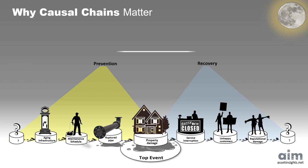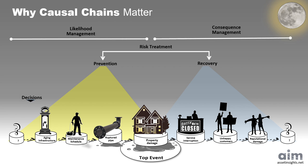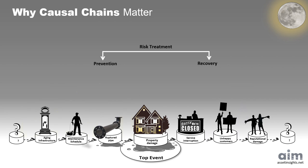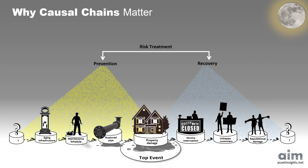While every risk tells a story, it's the chain of causes behind it that enables smarter decision-making. Map it well, and you can avoid the rupture. Miss a link, and you're left managing the fallout. Causal chains help shift our mindset from reactive to proactive, before consequences start piling up. In another video, we dive deeper into risk treatment.